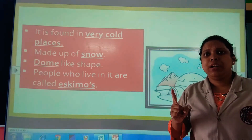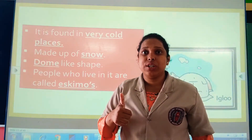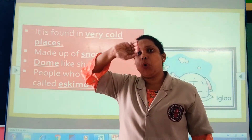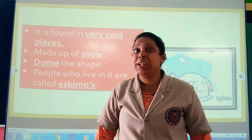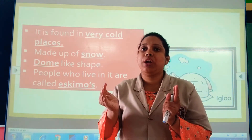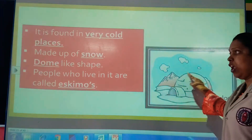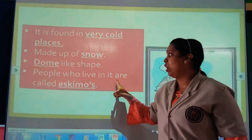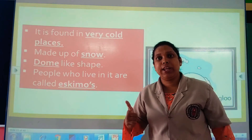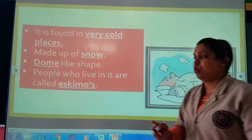Dome shape — where else can you find it? When you go to temples, churches, or mosques, you can see the dome from the top. It is a semi-circular round shape. In Hindi we say 'goombad.' An igloo is also dome-shaped. And the people who live in igloos are known as Eskimos.